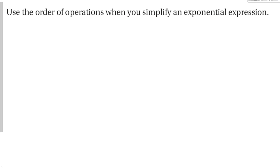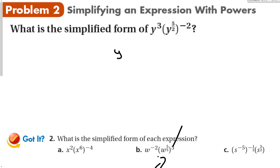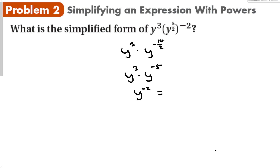We use order of operations when simplifying exponential expressions — exponents come before multiplication. So for y to the 3rd times y to the negative 10 all to the 2nd power, exponents come first: power to a power, multiply the exponents, giving negative 10 over 2, which is negative 5. That gives y to the 3rd times y to the negative 5, which is y to the negative 2. Since we don't leave negative exponents, this becomes 1 over y squared.